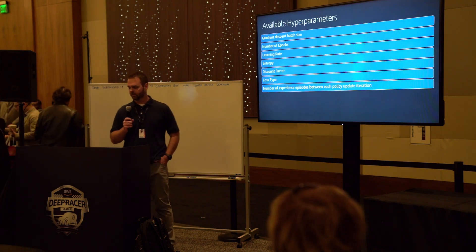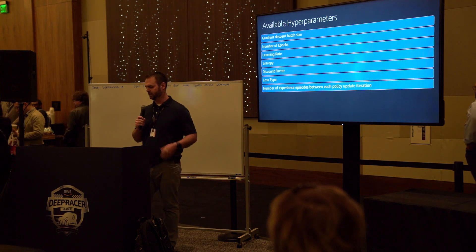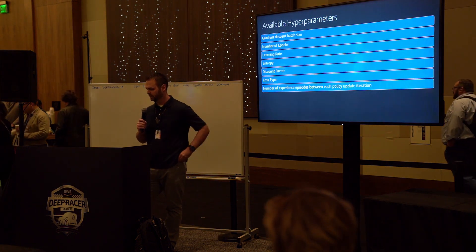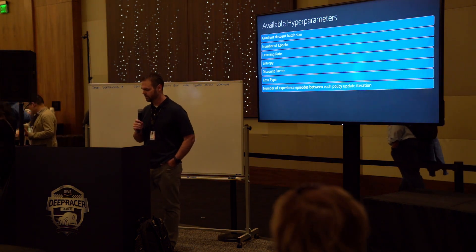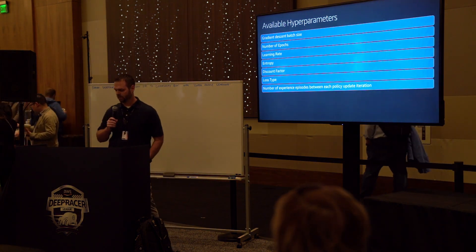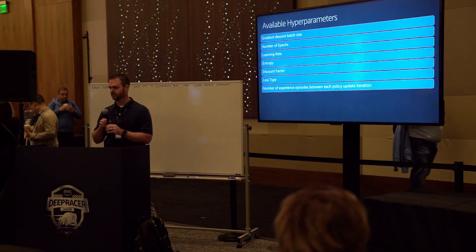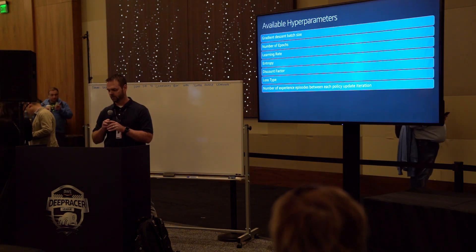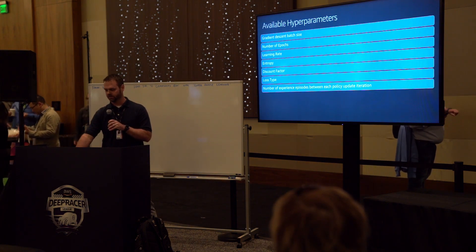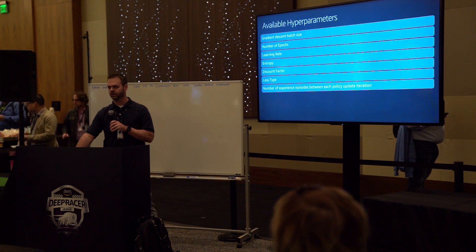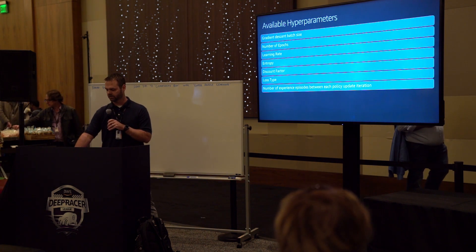The available hyperparameters for DeepRacer are: gradient descent batch size, number of epochs, learning rate, entropy, discount factor, loss type, and number of experience episodes between each policy iteration. We're going to touch on each one of these.